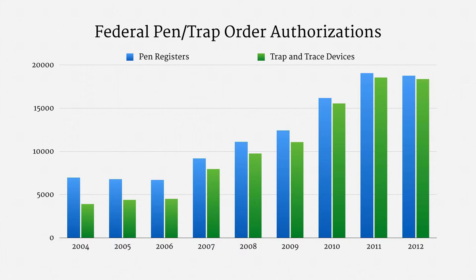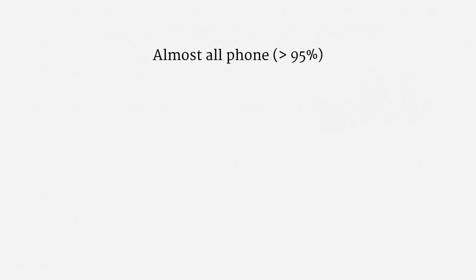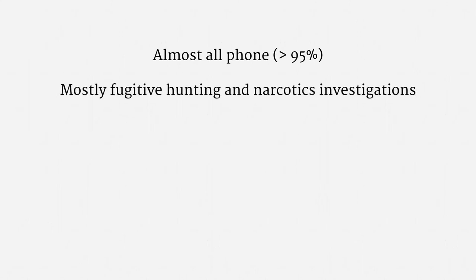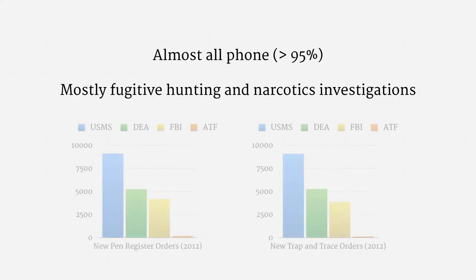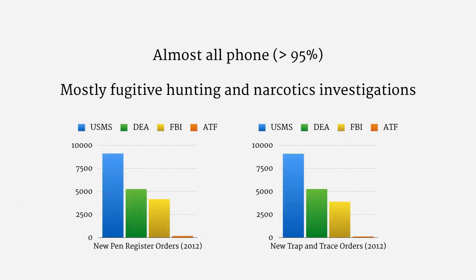A couple other observations: first, pen traps remain overwhelmingly a telephone surveillance tool — they have been increasingly applied to information technology, but that's still a small minority of orders. Second, federal pen traps are mostly used for fugitive hunting and for narcotics investigations. That's reflected in the breakdown of how federal law enforcement agencies use pen traps: the Marshals Service is far in the lead, followed by the Drug Enforcement Administration, then the Federal Bureau of Investigation, and the Bureau of Alcohol, Tobacco, Firearms and Explosives is a blip.